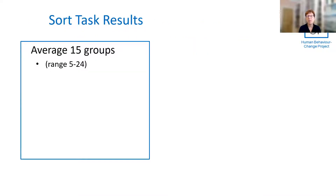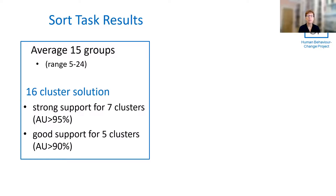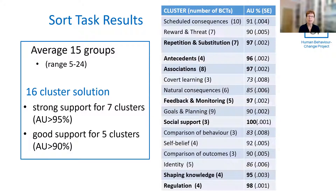The average number of groups was 15, but the best solution was the 16 cluster solution, where we had strong support for seven clusters and good support for a further five of the 16 clusters. And in bold here, you will see the seven clusters for which we had strong support for their grouping.